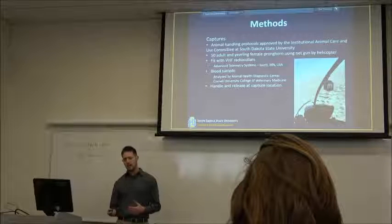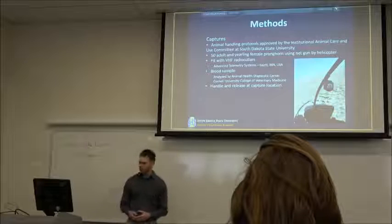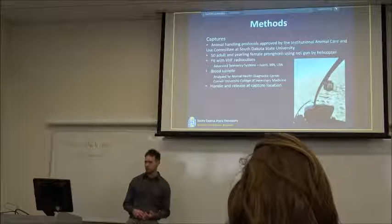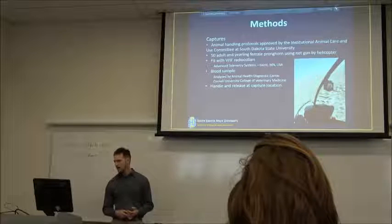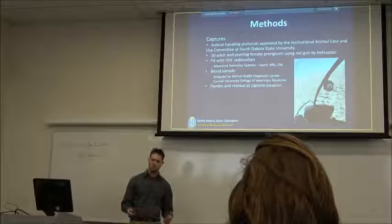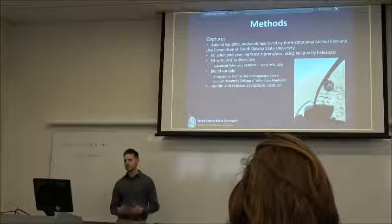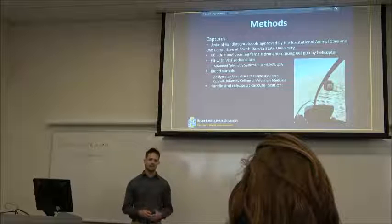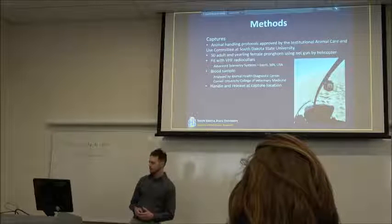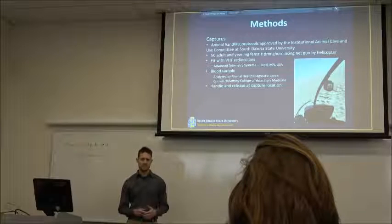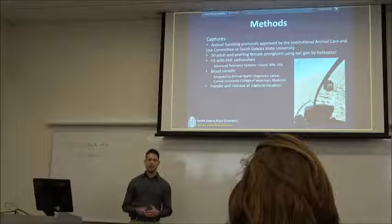Each individual will be fitted with a VHF radio collar equipped with a mortality sensor that's designed to activate when the collar is no longer moving after eight hours. We'll also age each individual according to a yearling or adult based on tooth wear and collect a blood sample to test for blood titers for diseases known to infect pronghorn populations such as EHD. And that will be analyzed at the Animal Health Diagnostics Center at Cornell University. And as a side note, we want to handle and release all these animals at the location that we capture them.